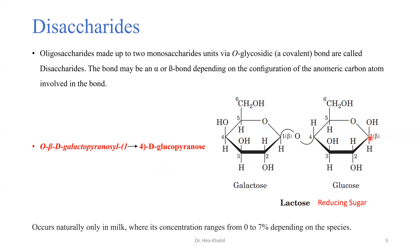An important observation: in lactose, the anomeric carbon of glucose is free — not involved in the glycosidic bond. This means only one anomeric carbon is involved in the disaccharide linkage, and the other is free. Whenever a disaccharide or any carbohydrate has a free anomeric carbon, that is a reducing sugar — it can react and reduce other species. Therefore, lactose is a reducing sugar.